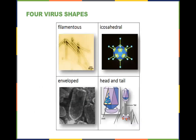There are four basic shapes: filamentous (tobacco mosaic virus), icosahedral, enveloped, and head-and-tail, where you have T4 with the head here and the tail here. It draws these spider-like legs to show how it finds a way to inject the genetic information — it should remind you a lot of, say, a mosquito.